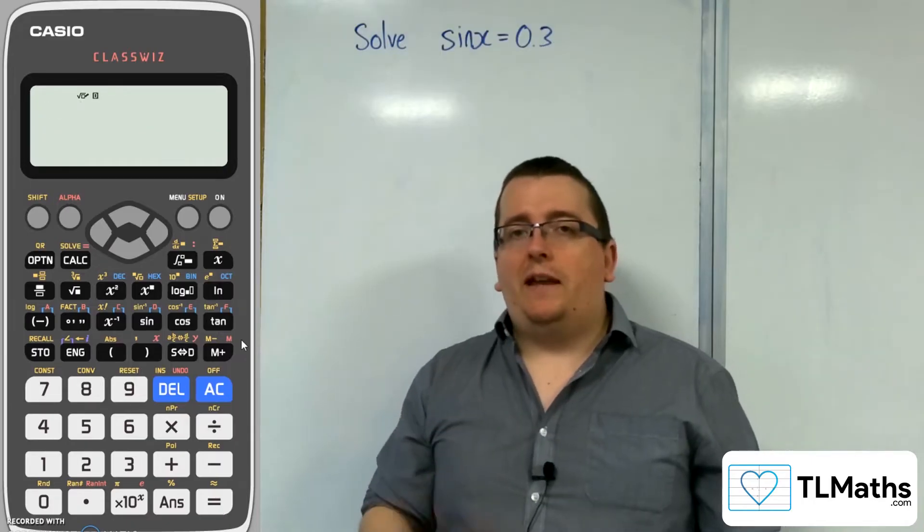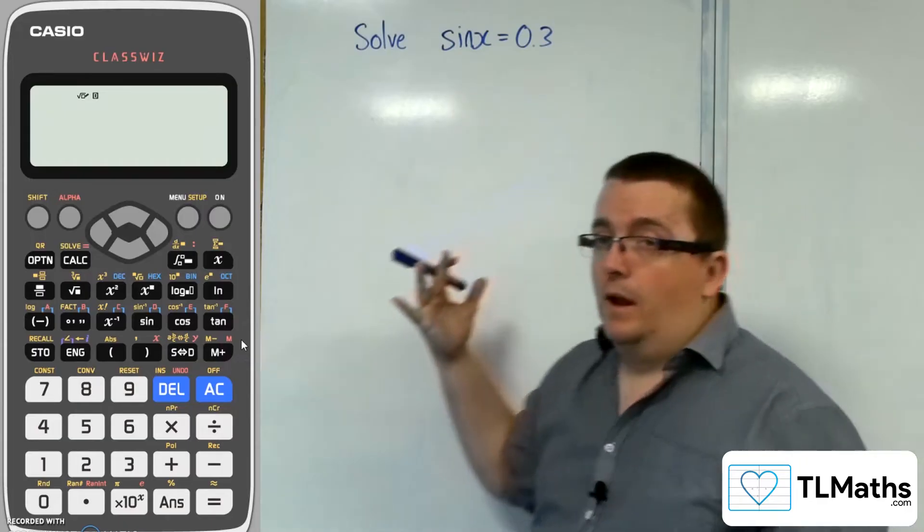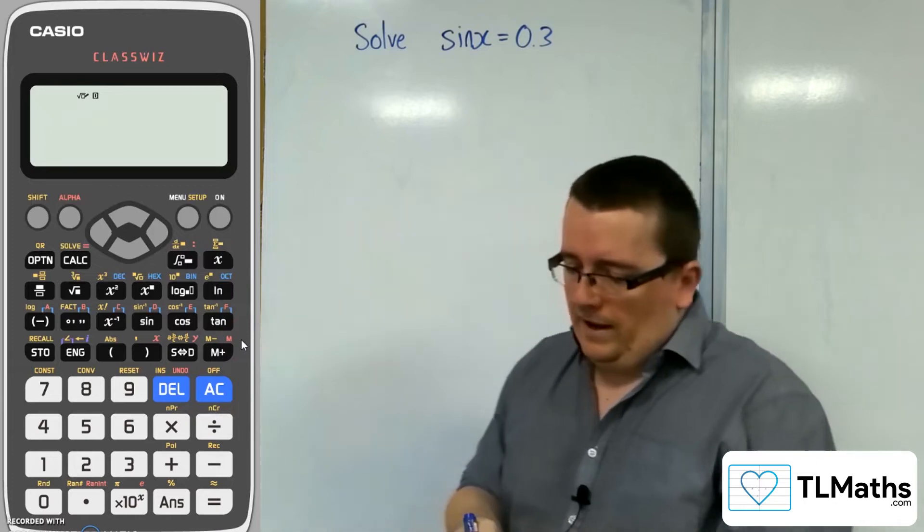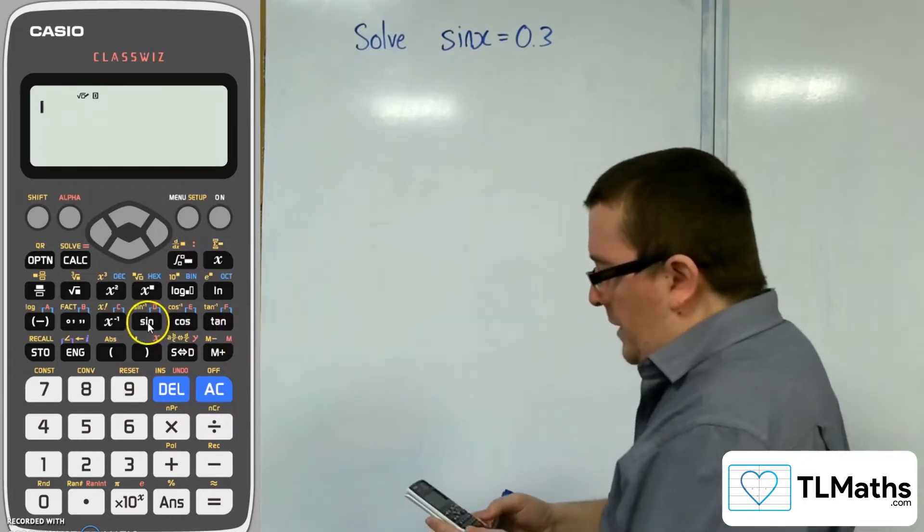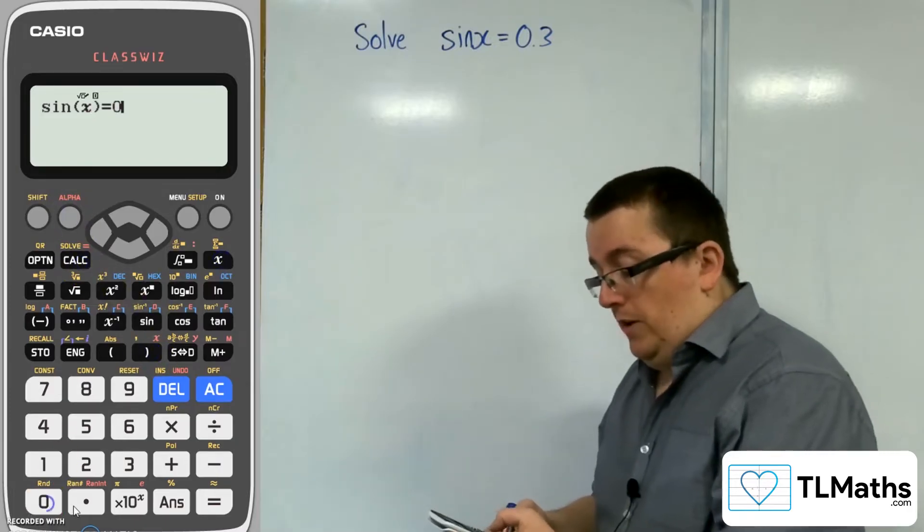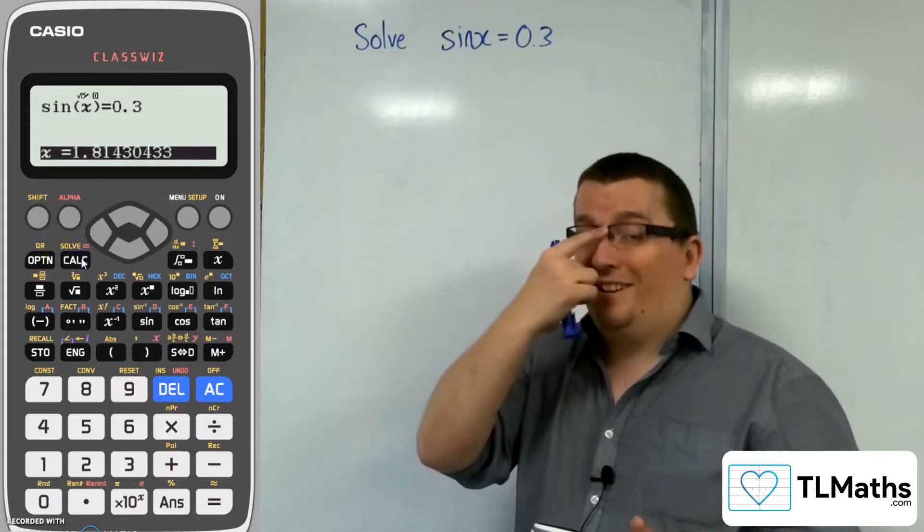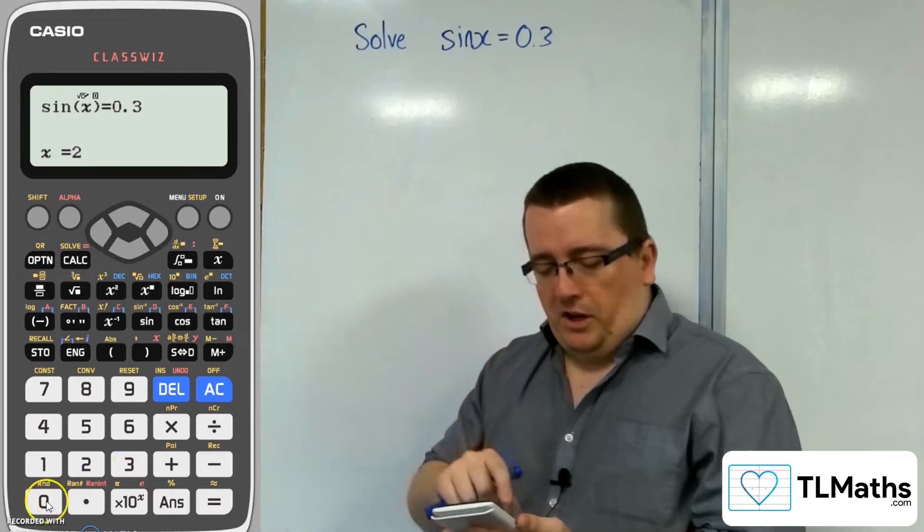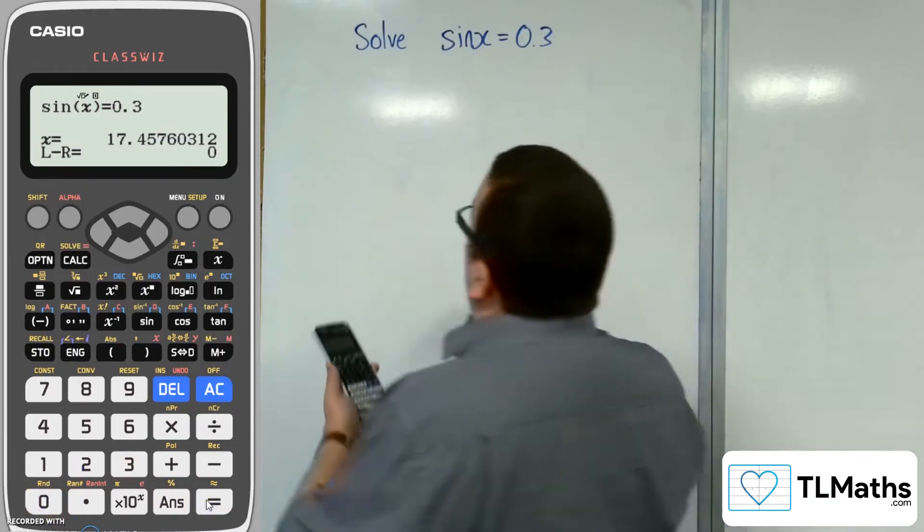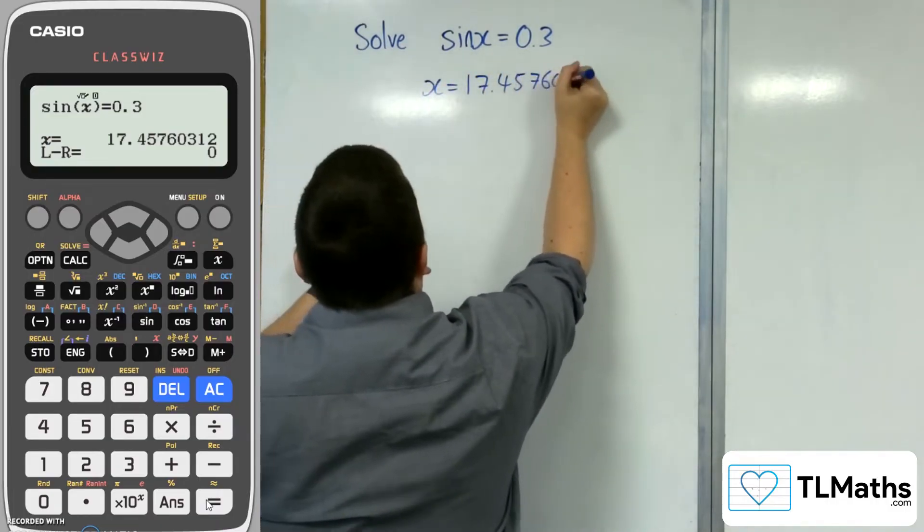Now if we tried sin x = 0.3 instead, this has an infinite number of solutions. So how does your calculator handle that? Let's see. If we type in sin of x equals 0.3, using the red equals here, and then press shift solve. My calculator is in degrees, just to let you know. Let's start with x = 20 and see what happens.